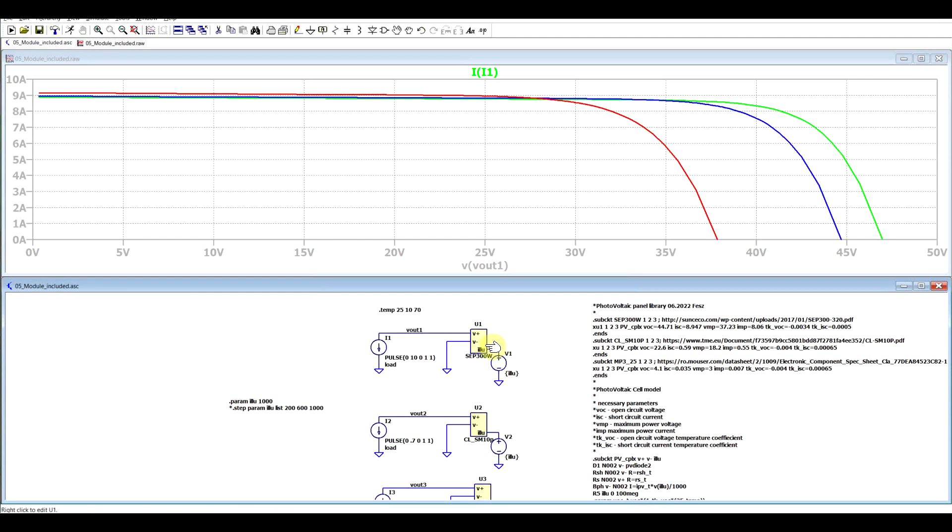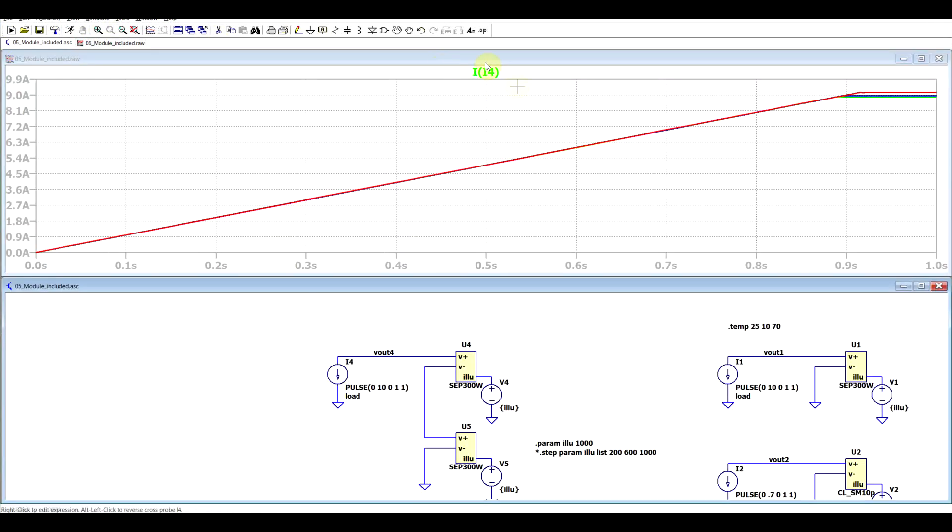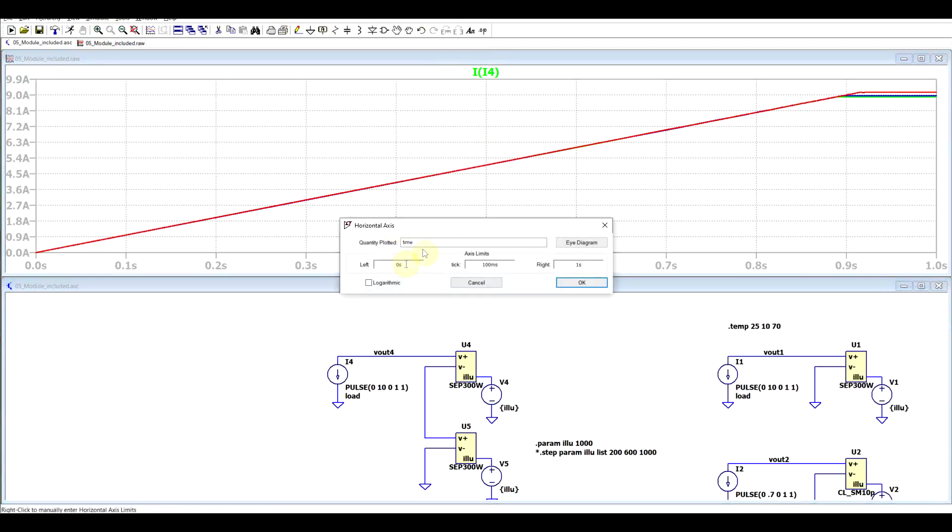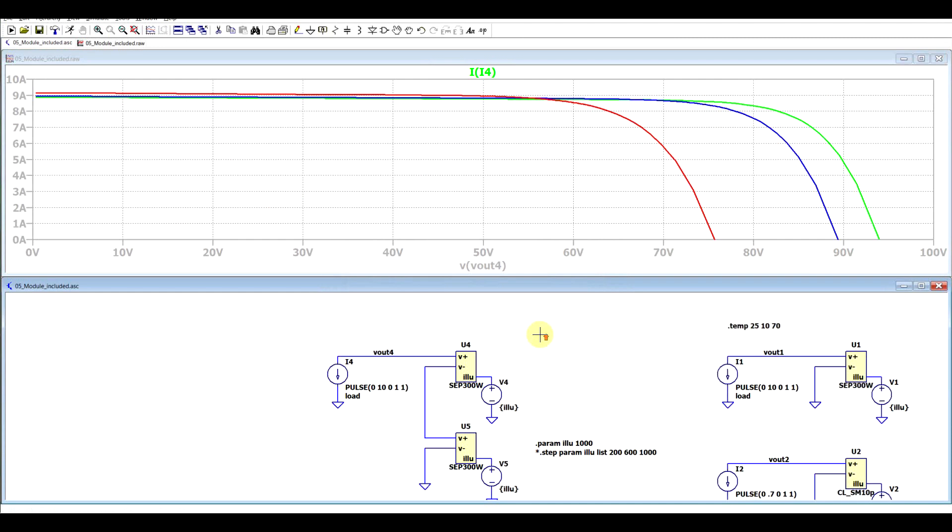The advantage now is that we can make simulations with multiple implementations of the same model. We can now run a simulation that looks something like this: we have two solar panels in series both exposed to the same amount of illumination, both having a common load. If we look now at the current expressed again based on the output voltage we can see the same current as before but this time we have double the output voltage.